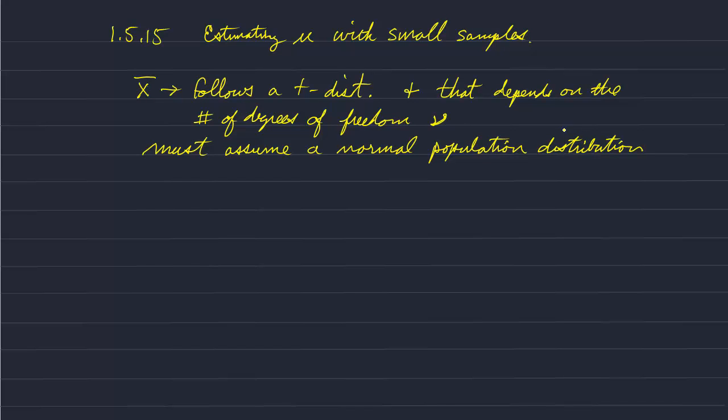But here we have to assume that the population distribution is normal. So this test, or this statistic, this t statistic strictly applies to a normal population distribution. So it's a little bit more restrictive, but this is what we have to do for smaller samples.